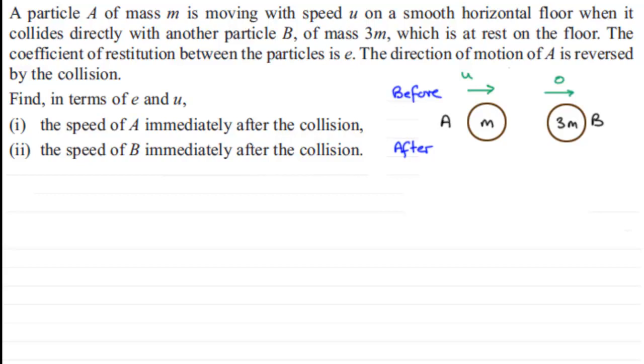So, what we need to add to this diagram here is the final speeds of our particles. Now, we're told that A's motion, the direction of motion of A is reversed by the collision. So, clearly then, that's going to go off now to the left. And I'm going to call this a final velocity. We'll call it VA. And B will start to move to the right. As soon as it's hit by A, the only direction it can go is off to the right. So, we'll put an arrow in that direction, and we'll call that VB.